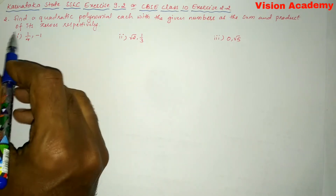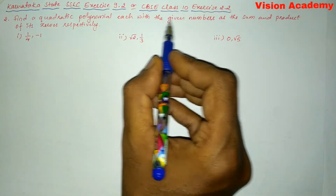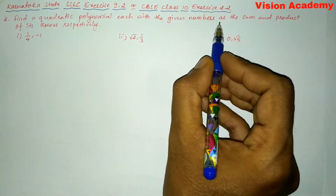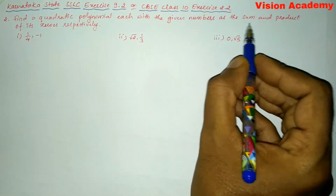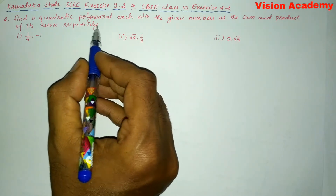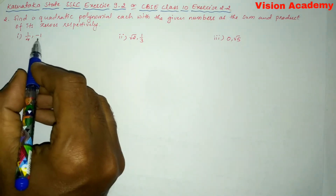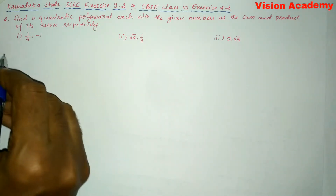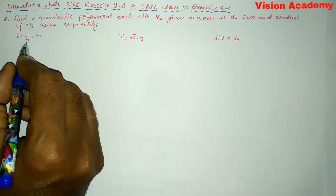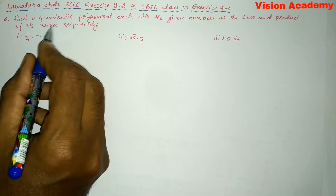Question number two: find a quadratic polynomial, each with the given numbers as the sum and product of its zeros respectively. Roman number one: one by four comma minus one — here, one by four is the sum and minus one is the product of its zeros.